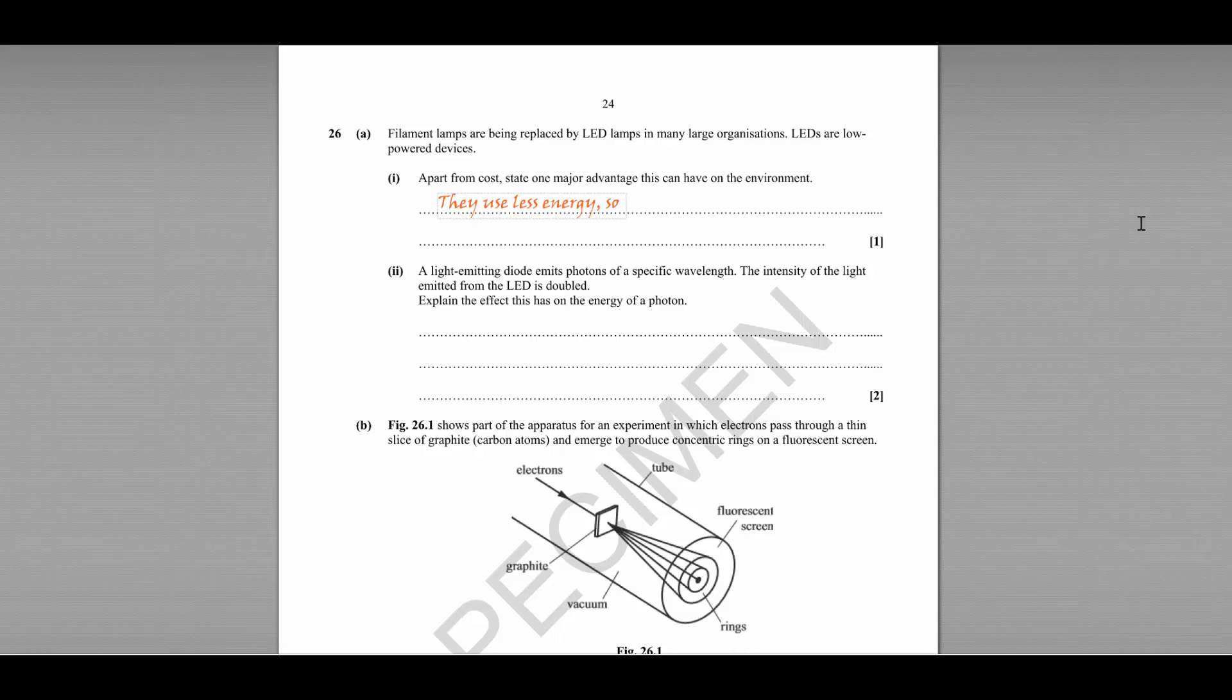So lower CO2 emissions and therefore reduced impact on climate change. Part 2: a light emitting diode emits photons with a very specific wavelength.